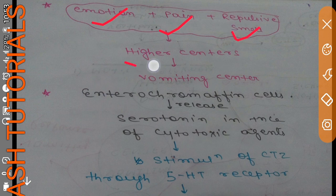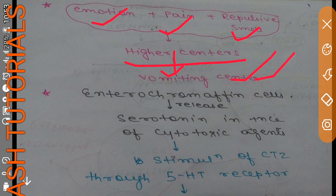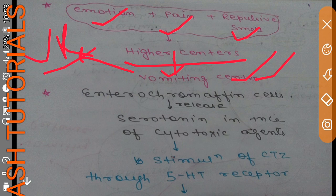Any emotions, pain, and repulsive smell — all three of these stimulate higher centers, which in turn stimulate the vomiting center, leading to the vomiting response. Third, enterochromaffin cells in the stomach release serotonin in the presence of a cytotoxic agent.